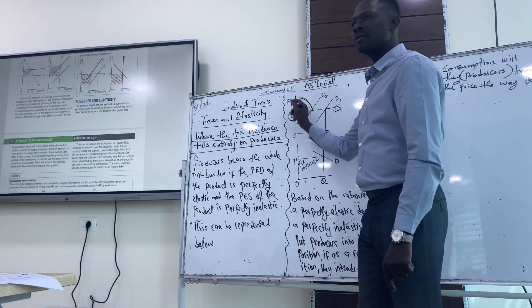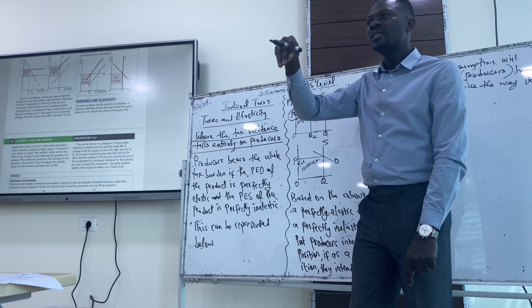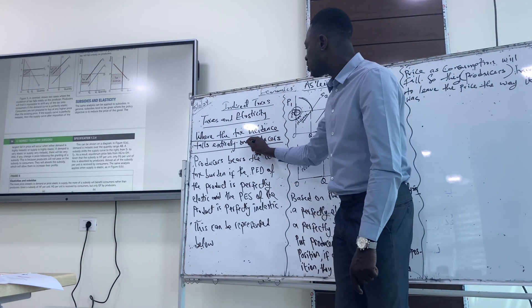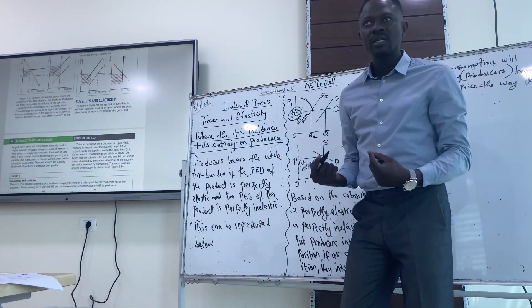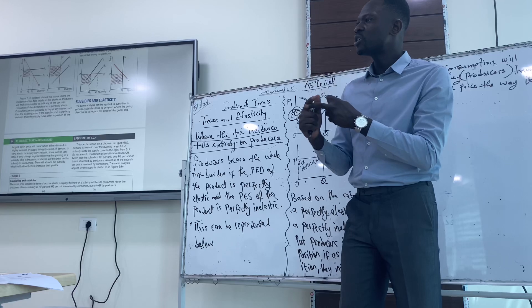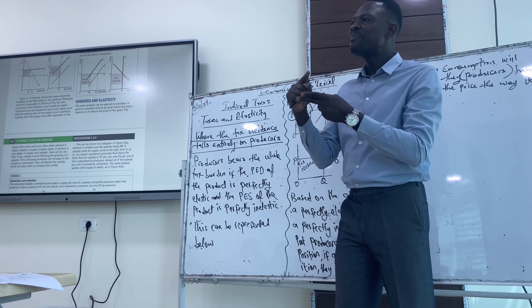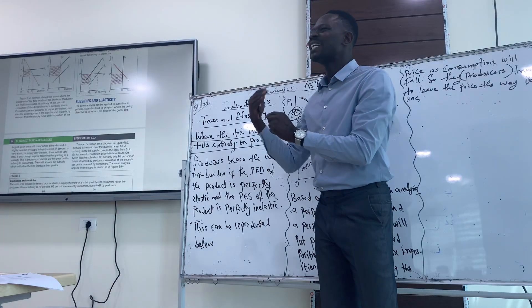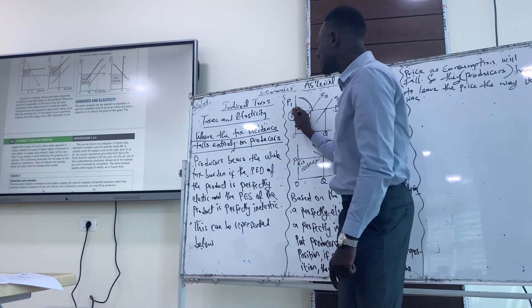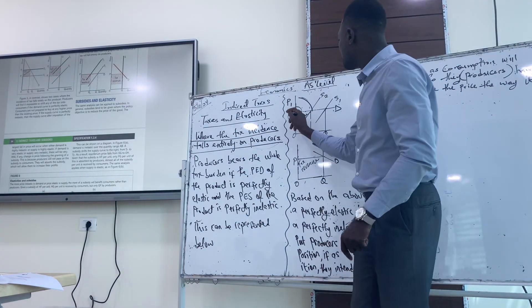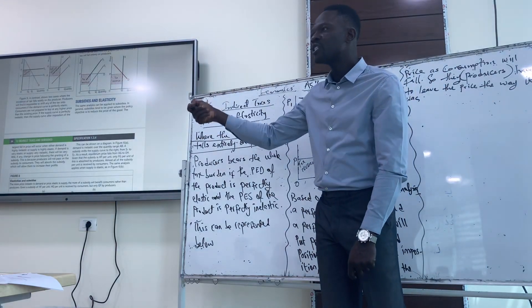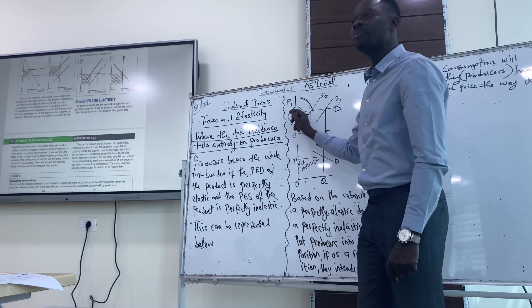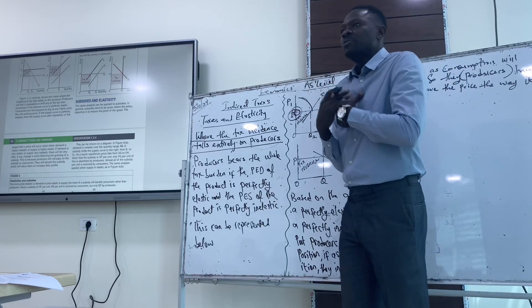There's a tax burden, which means tax has to be paid for consumption. But who pays this tax? Based on the fact that producers are paying the entire tax, there are two situations about elasticity. The first situation is demand being perfectly elastic. The second situation is supply being perfectly inelastic. Both situations put producers in a disadvantaged position because they cannot increase the price. The price will remain the same if they really want the market to clear, because this is the price consumers are willing to pay. But there's an imposition of tax by government which has to be paid, so they take the tax burden as part of their cost.